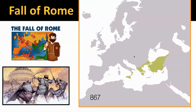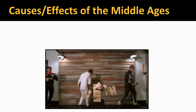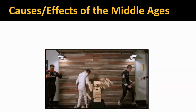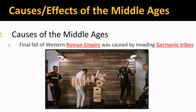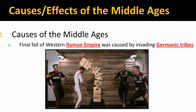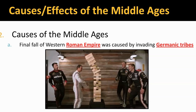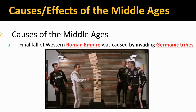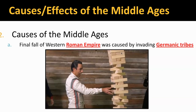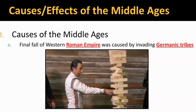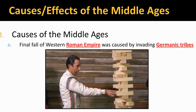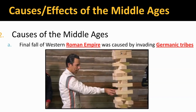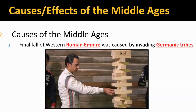We'll have different groups come through — we're going to talk about the Franks and the Holy Roman Empire that will take over this part of Europe. The fall of Rome is where this story has to start. We used Jenga in my class to show the fall of Rome, so that should look familiar to my students — we saw this same animated GIF. The final fall of the Western Roman Empire was caused by invading Germanic tribes. Look at that as the number one cause of the Middle Ages.